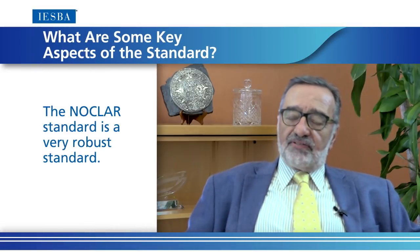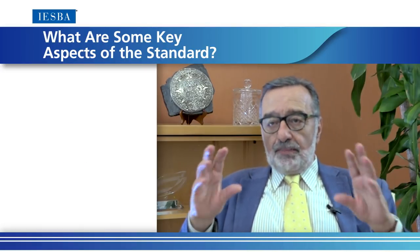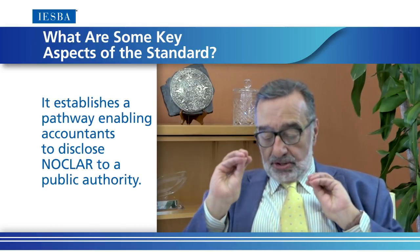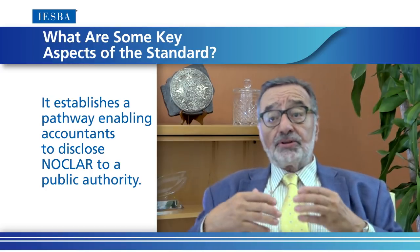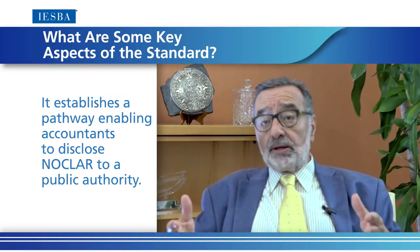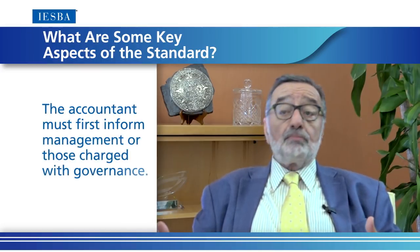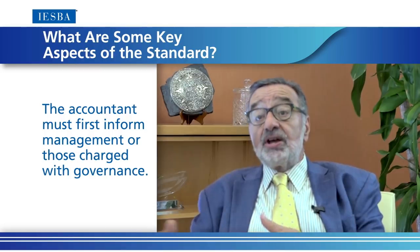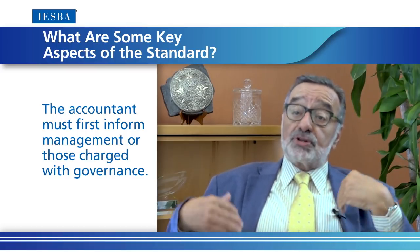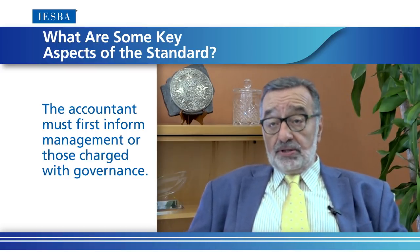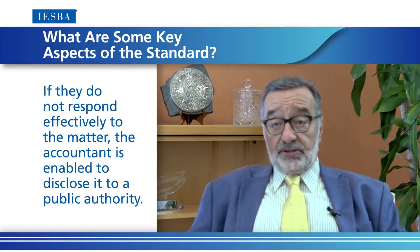The NOCLAR standard is very robust because it establishes a pathway enabling accountants to disclose NOCLAR to a public authority. This can happen under some circumstances. If the accountant discovers a non-compliance, he must first inform management or those in charge with governance in the organisation where the non-compliance takes place. If management or those in charge with governance do not respond effectively, then the accountant is enabled to disclose the matter to a public authority.